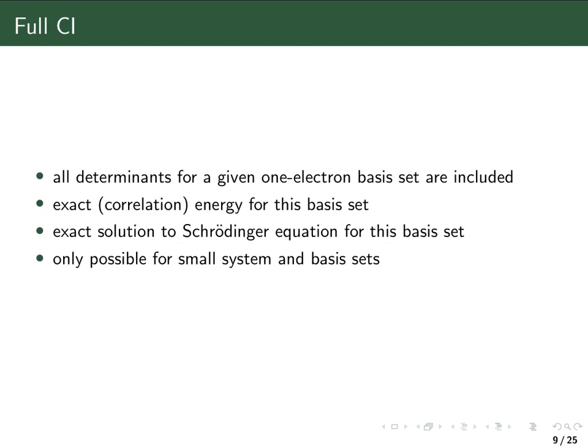One of the CI methods is called full CI. Full CI is the method where we include all the determinants that can be generated from the one-electron basis set — the full expansion in whatever basis we can use, which in actual calculations is always finite. Doing a full CI calculation gives us the exact energy for the ground state, as exact as possible within the given one-electron basis set. Subtracting the Hartree-Fock energy from this result gives the exact correlation energy within that basis set.